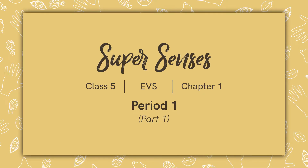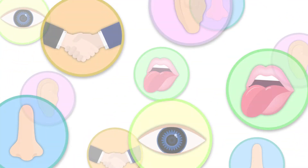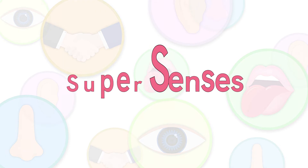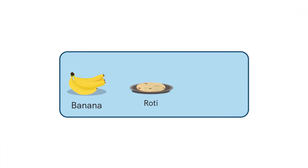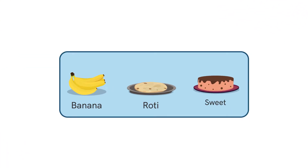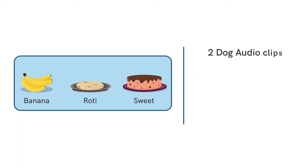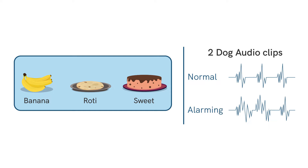Welcome back. Today we're going to learn some engaging ways to teach Super Senses. Before starting the class, we need to have a few things with us: three food items — a banana, or roti, and a sweet; two audio clips of sounds made by dogs, one normal and one alarming; and lastly, we need to have a picture card of a tiger's face.